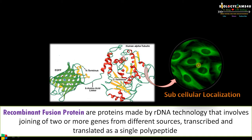Now let us define recombinant fusion protein. Recombinant fusion proteins are proteins made by recombinant DNA technology that involves joining two or more genes from different sources, transcribed and translated as a single polypeptide. Here, the alpha tubulin gene of human and the green fluorescent protein gene of jellyfish are joined together to form a fusion protein.